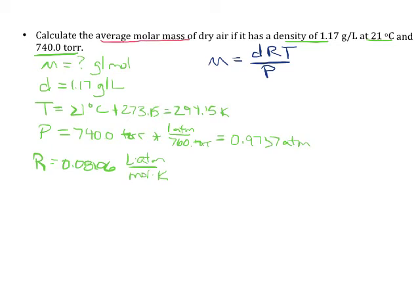So that's going to give us a pressure of 0.9737 atmospheres. Again, we should always make sure our answers are reasonable. 740 is less than 760, so this is less than an atmosphere, so we should be at less than an atmosphere. Since that equation is already solved for the mass, we can leave it as is, just plug in our numbers.